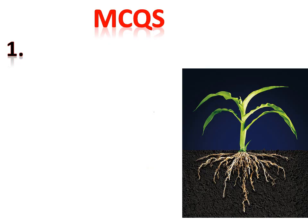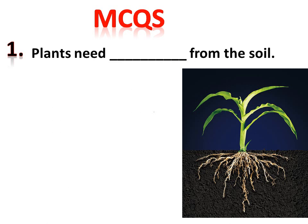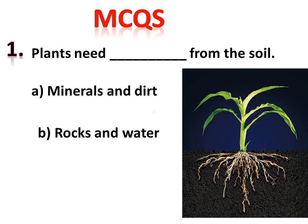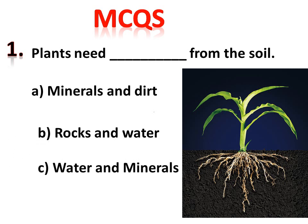Let's see what you have learned. We have some questions. First: plants need dash from the soil. Option A is minerals and dirt, option B is rocks and water, and option C is water and minerals. The correct answer is C — plants need water and minerals from the soil.